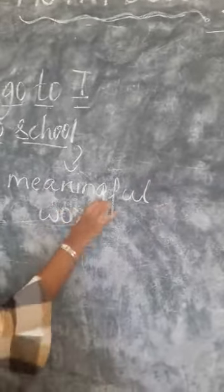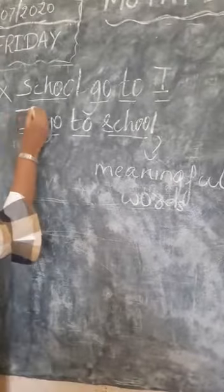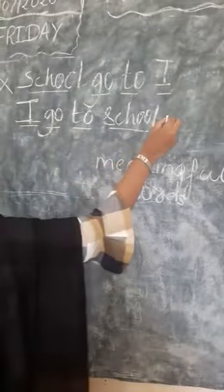So what is this? A sentence is nothing but a group of meaningful words. And if you notice, a sentence will always begin with a capital letter and it will always end with a full stop.